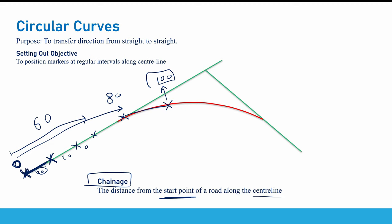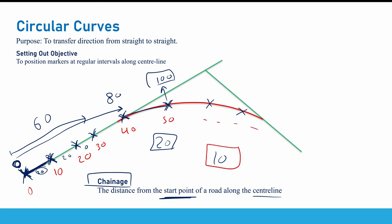The distance from the start point of a road along the center line is called the chainage. So the chainage of the points would be 0, 20, 40, 60, 80, 100, 120, 140 — in the case where the interval is 20 meters. If the interval is 10 meters, the chainages would be 0, 10, 20, 30, 40, 50, and so on. The chainage is simply the distance from the start point of a road along the center line, and we are going to use this term a lot.